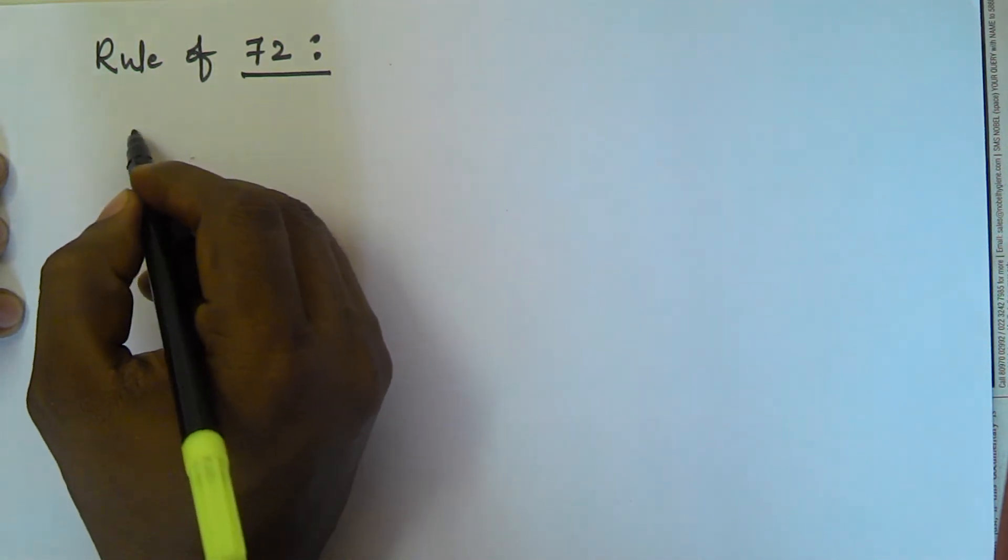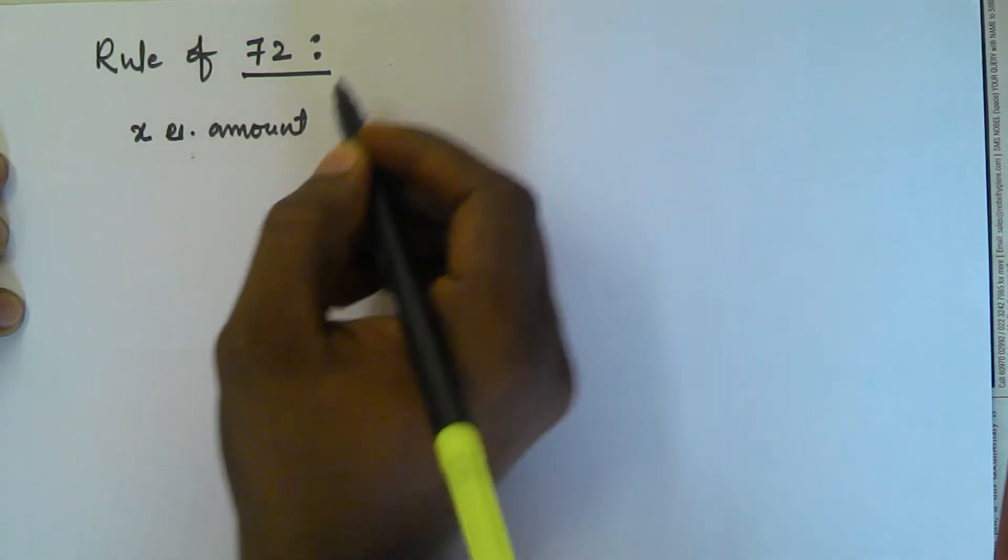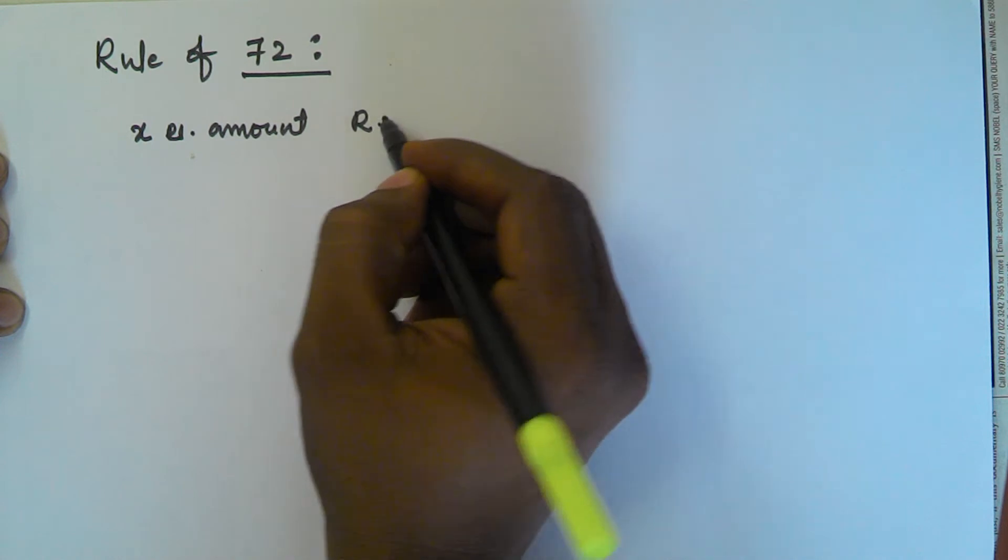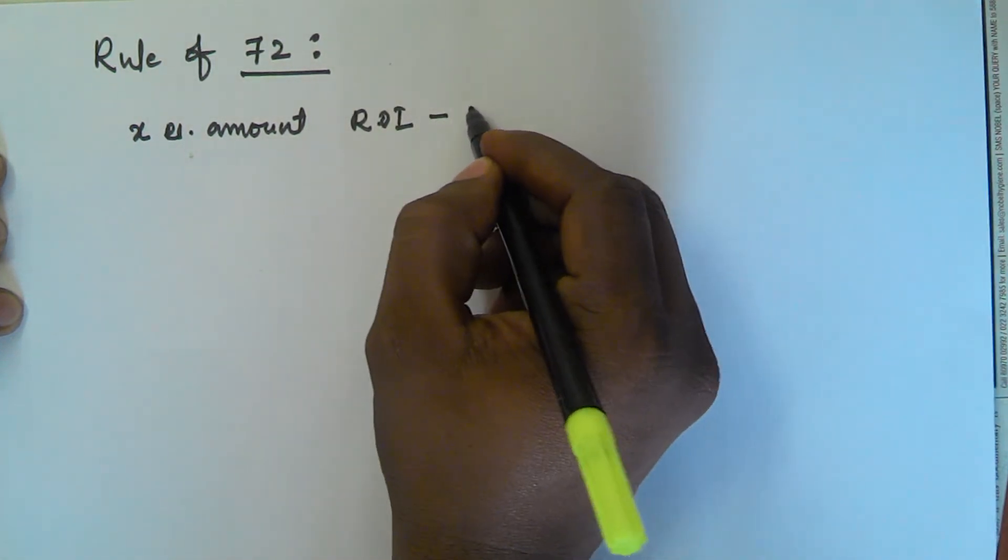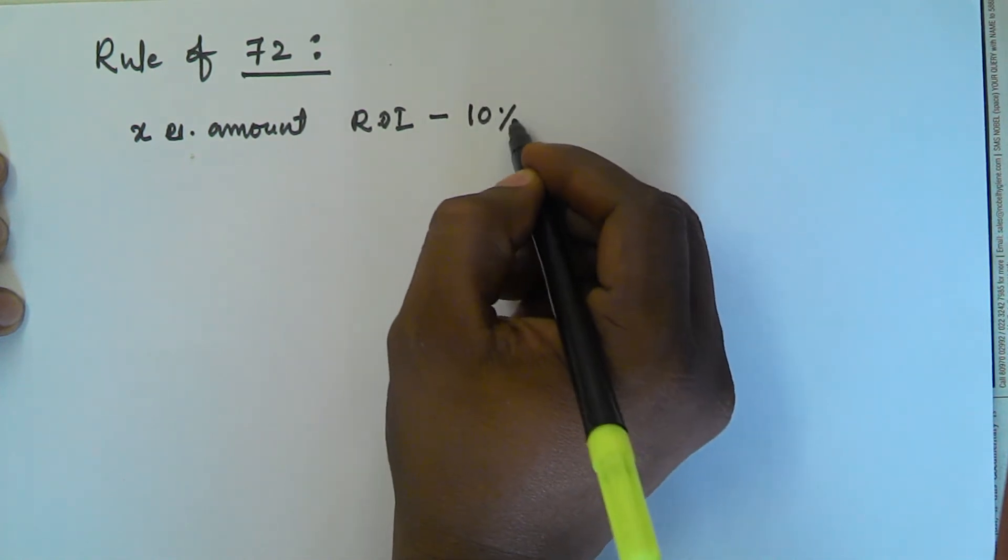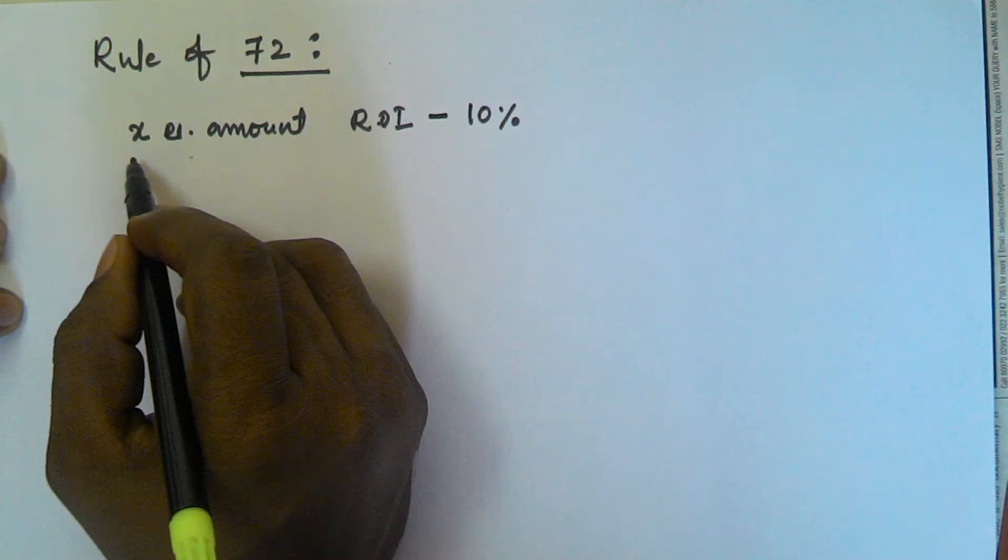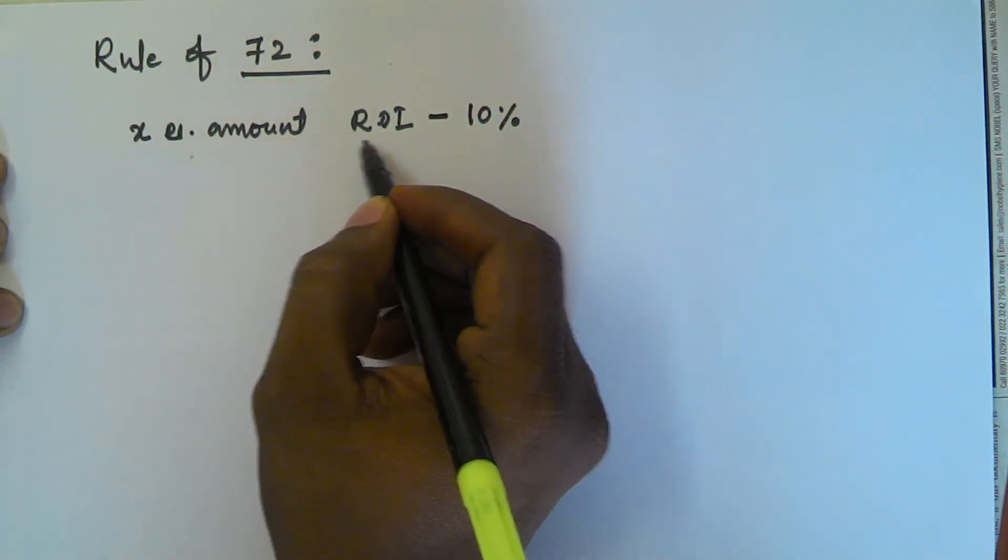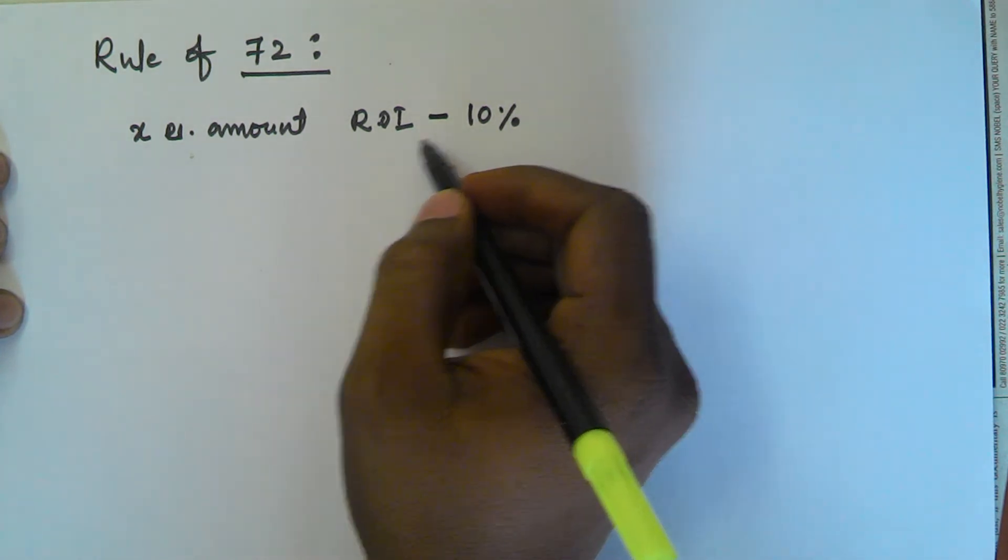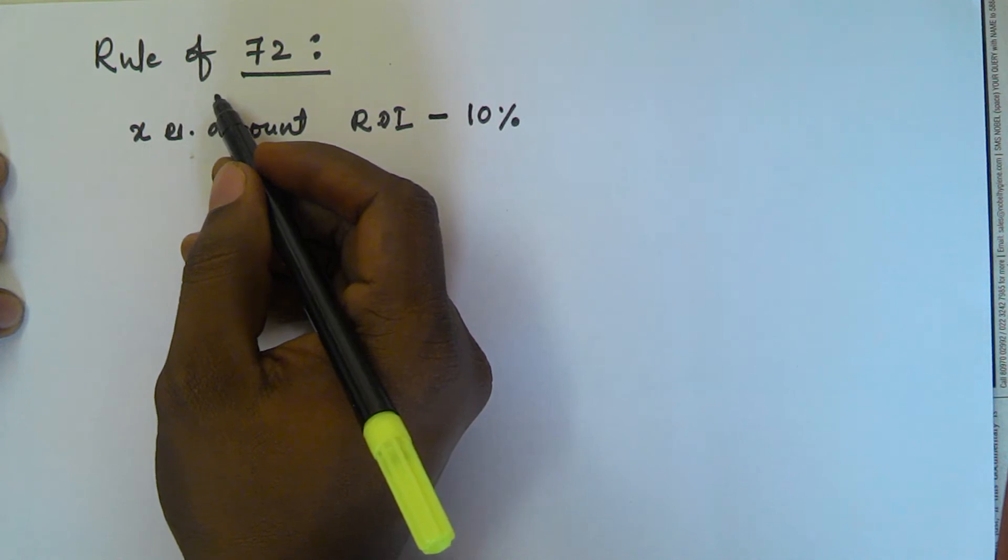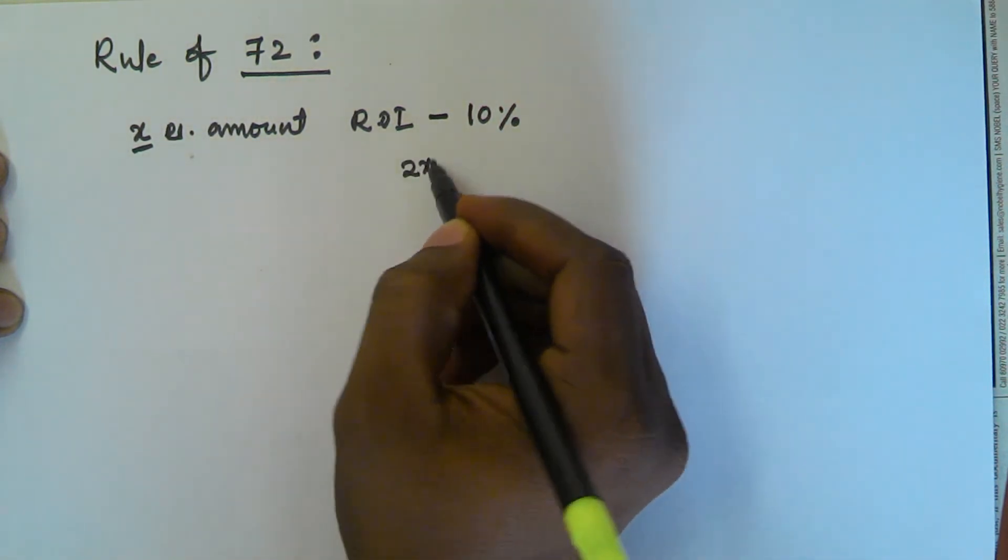For example, we have x rupees amount and the rate of interest per year on this amount is 10% we are getting. So now we have to find after how many years this amount will become 2x, that means doubled.